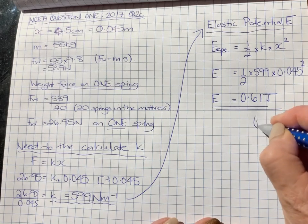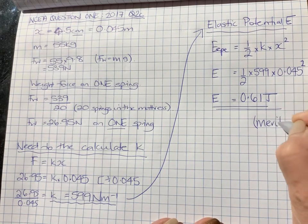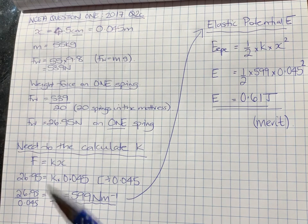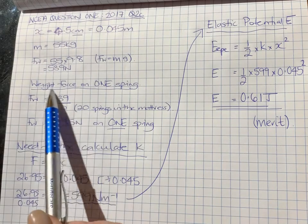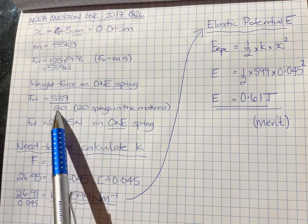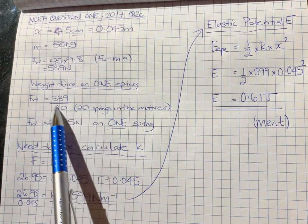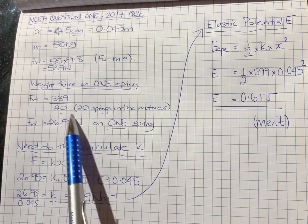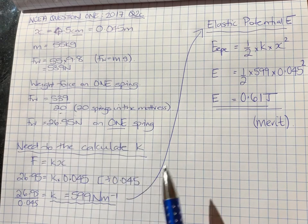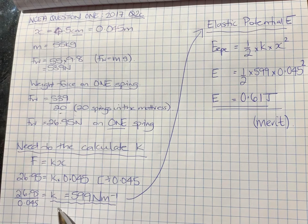And that question there, if you manage to get it right, will get you a merit in the end of your exam. So the tricky thing here was to remember to divide the weight force by 20, because the weight force of Sarah is distributed across all 20 of the springs in the mattress. So we need to find the amount of weight force that one spring experiences before we can calculate the spring constant. There's quite a bit of work in that question for a merit.